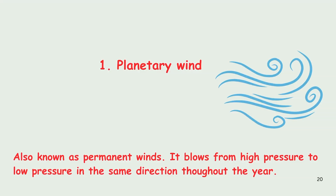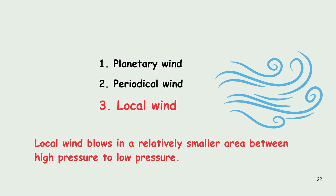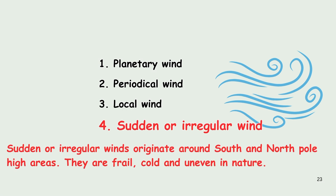First, planetary wind, also known as permanent wind, blows from a high pressure area to a low pressure area in the same direction throughout the year. Next is the periodic wind — these winds, unlike planetary wind, change direction with the change in season. Next is local wind, which blows in a relatively smaller area between high pressure and low pressure. Finally, sudden or irregular winds originate around the south and north pole high areas and are frail, cold, and uneven in nature.